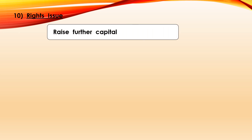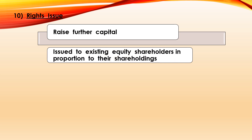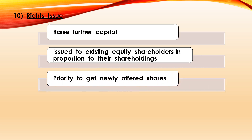The tenth feature of equity shares is rights issue. Whenever a company goes for expansion or growth activities, it requires further capital and issues shares in the market. However, when these shares are first offered to existing equity shareholders in proportion to their existing shareholdings, it is called a rights issue. In this way, equity shareholders enjoy the priority to get newly offered shares before they are offered to the general public. This benefit is available only to equity shareholders and not to preference shareholders.